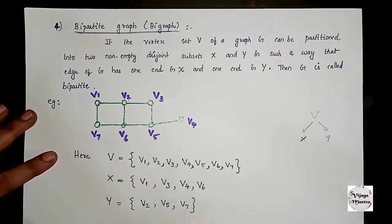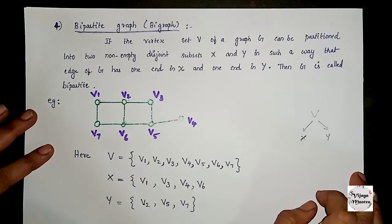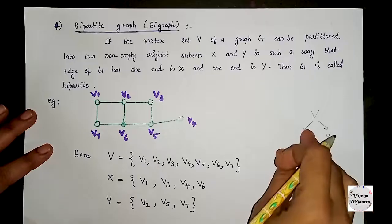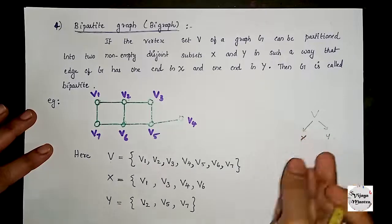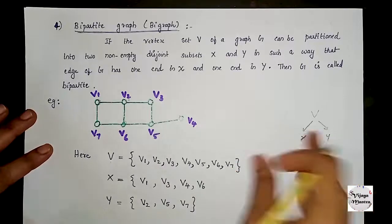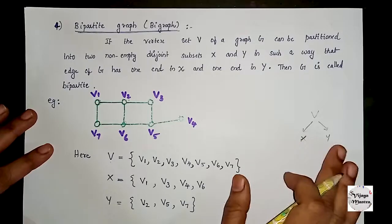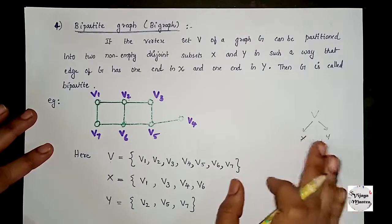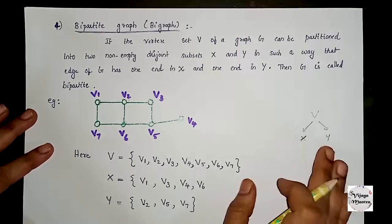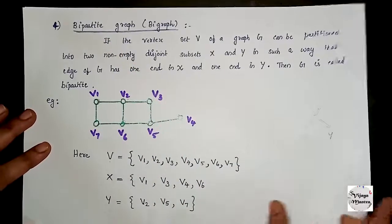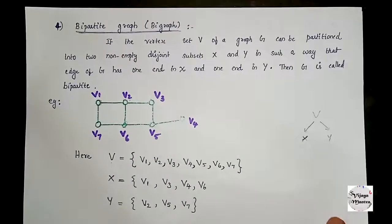X and Y are non-empty disjoint subsets such that every edge goes between X and Y. Therefore G is a bipartite graph.